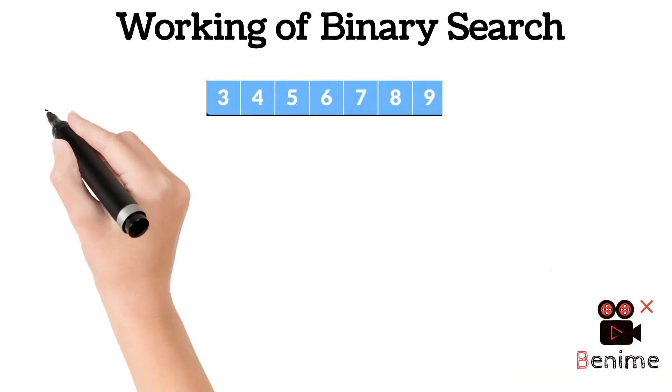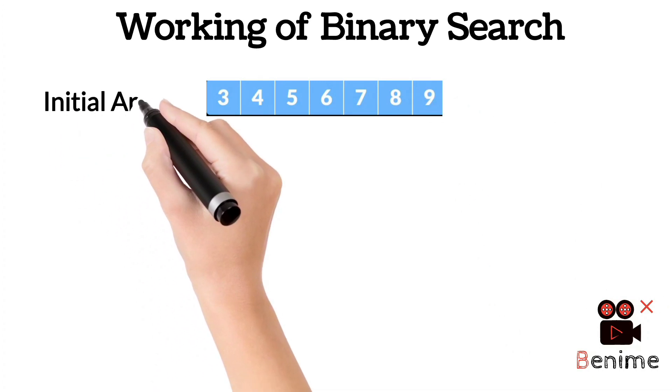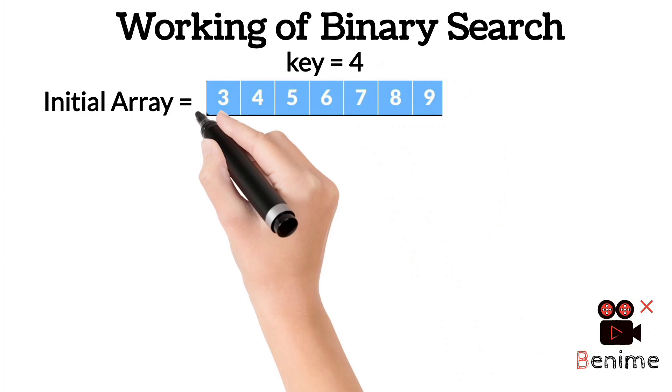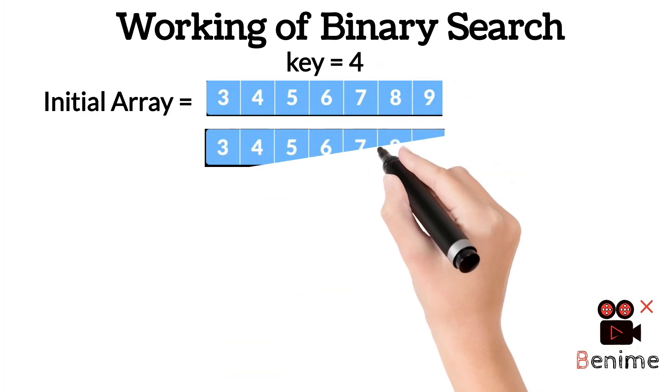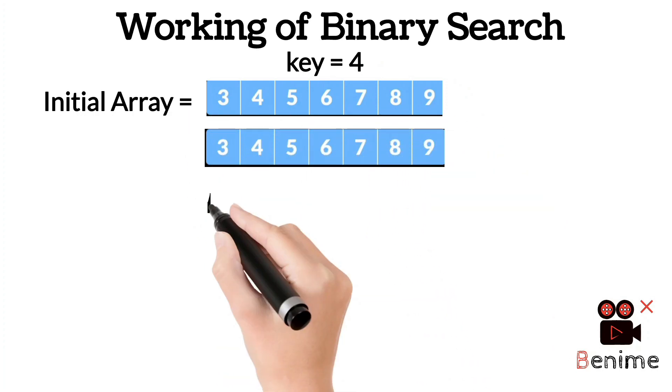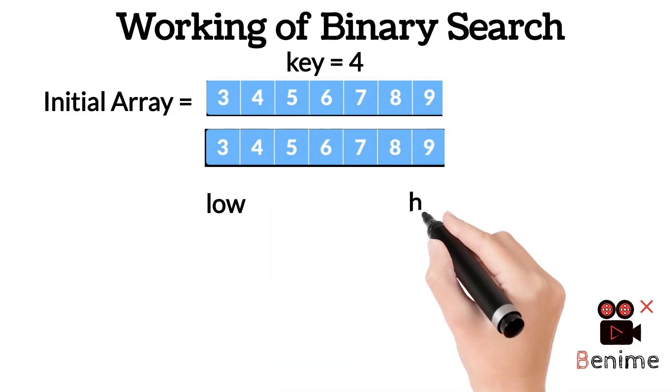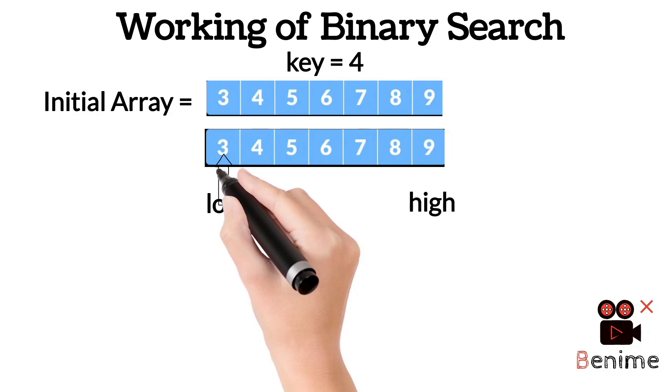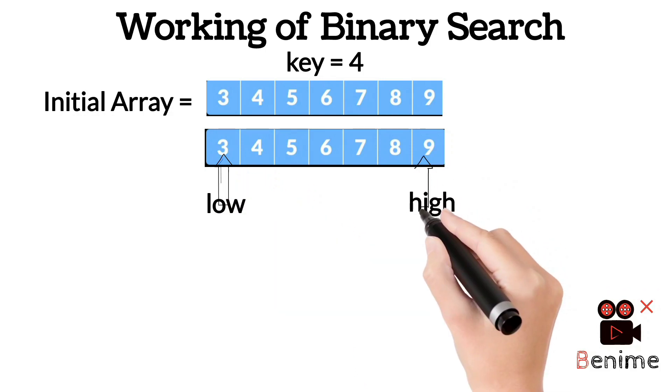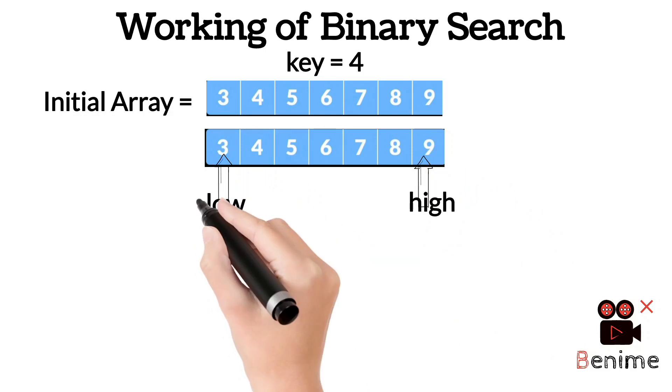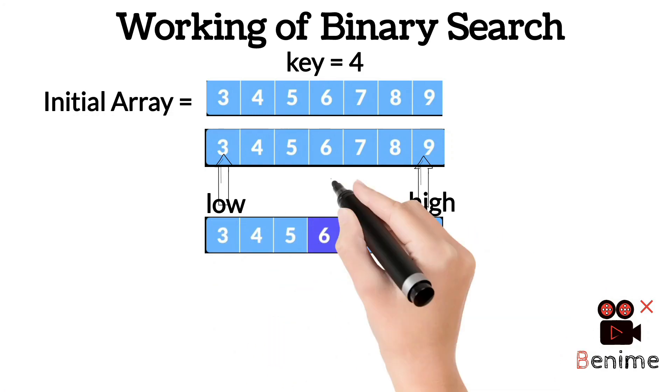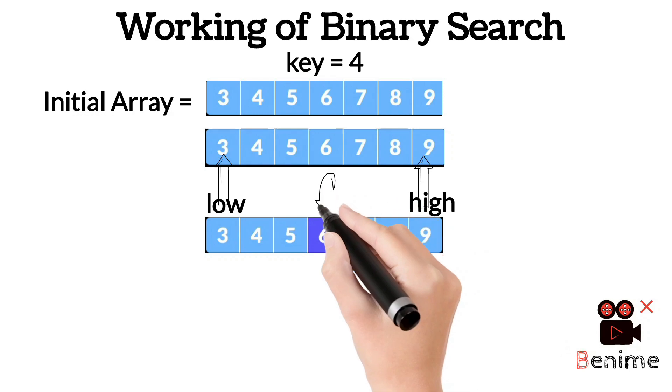We initialize the array: 3, 4, 5, 6, 7, 8, 9. The key element to find is 4. We denote the last element of the array as high and the first element of the array as low. Then we find the mid element between low and high. The mid element is 6.